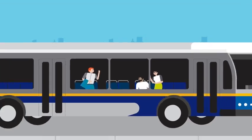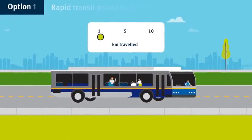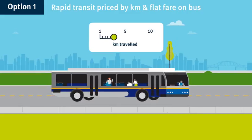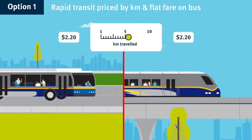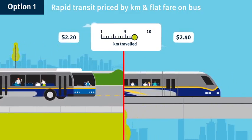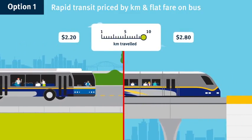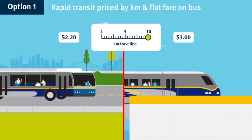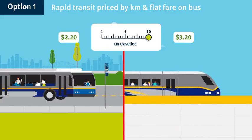Let's look at the two options. In option one, bus service would cost a flat fare, while rapid transit fares would be based on kilometres travelled. This makes it easy to predict your fare on the bus, and your rapid transit fare would be proportional to what you use.